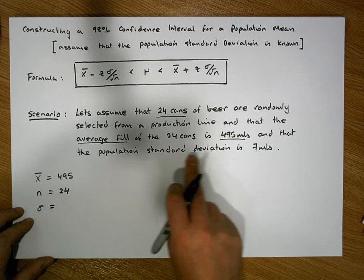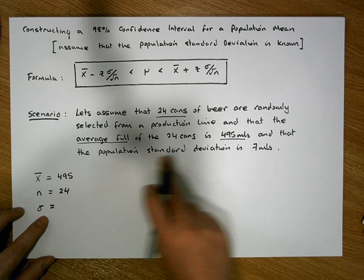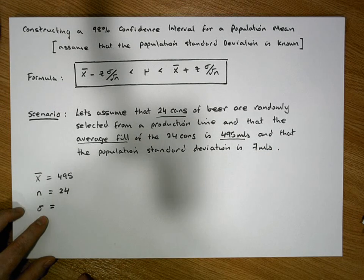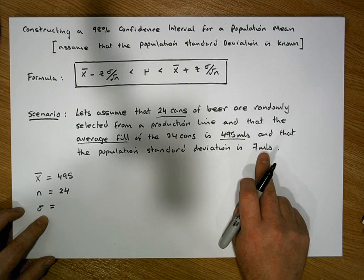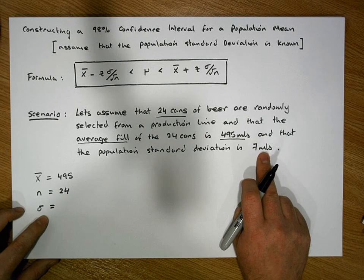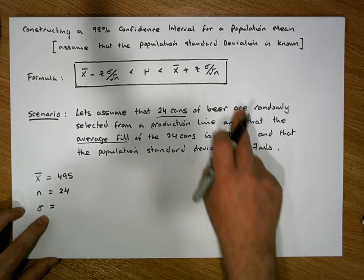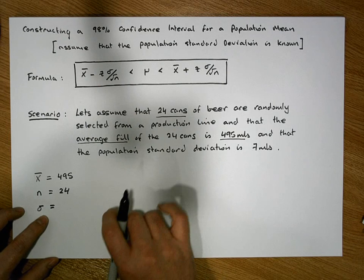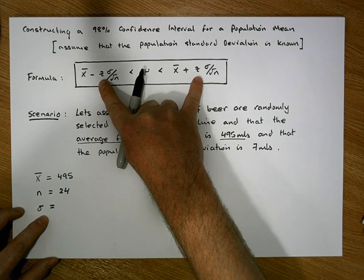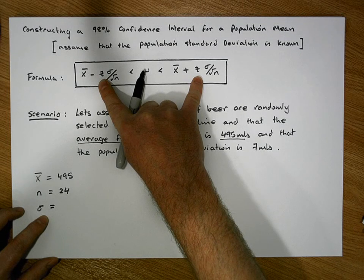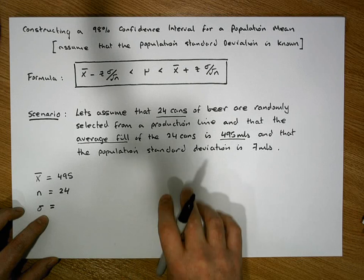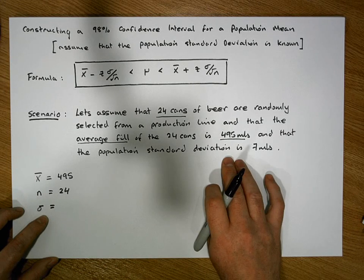We also need the population standard deviation sigma, which is defined to be known and equal to 7 mils. This needs to be given — if the population standard deviation isn't given, we'd need the sample standard deviation in its place, in which case the formula changes and we rely on a t-distribution, calculating t-values rather than z-values. But because the population standard deviation is known and is 7 mils, we rely on the standard normal distribution for this interval.